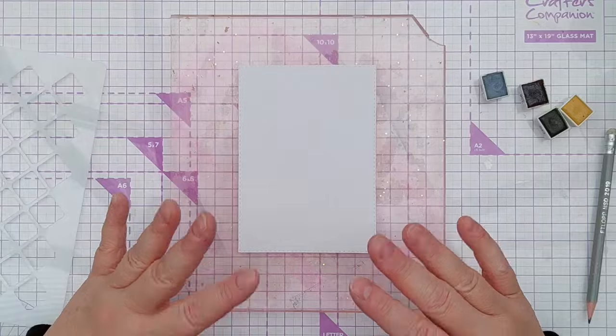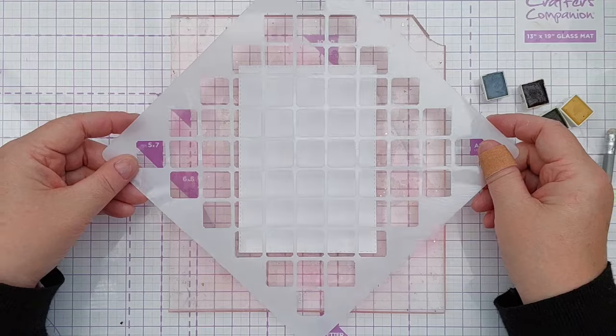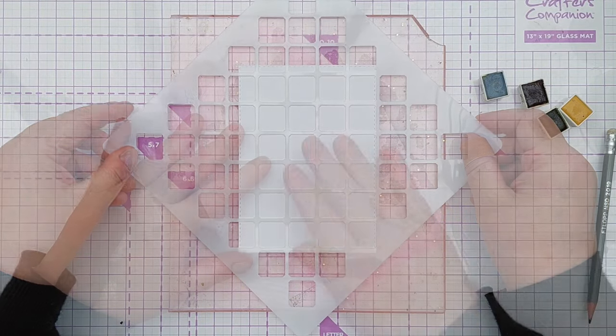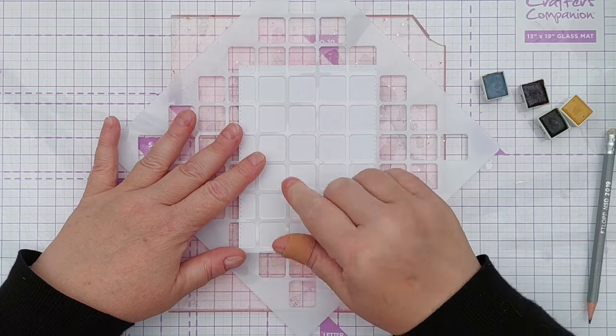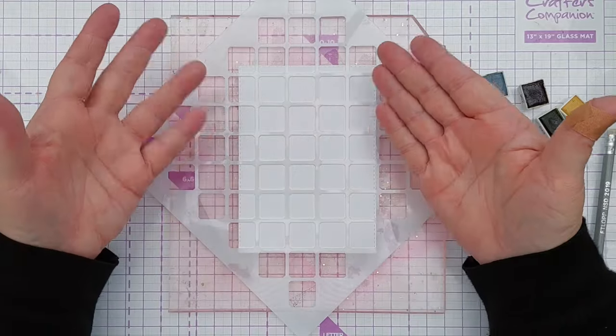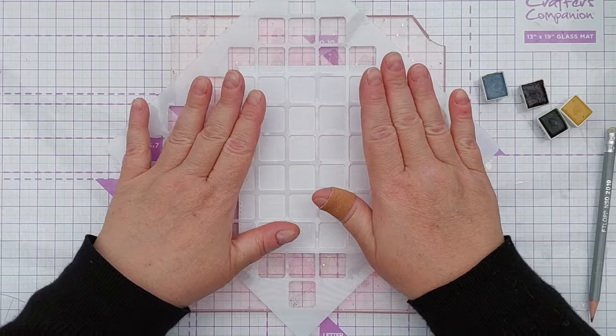The first thing I'm going to do is use this tile pattern, square pattern stencil to draw a grid on my card panel here. This is mixed media paper, you can use any paper or card that will handle watercolor well so something like mixed media paper, watercolor paper, bristol smooth cardstock, something like that.